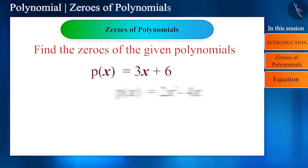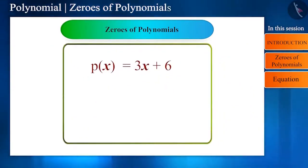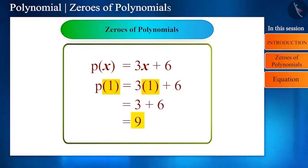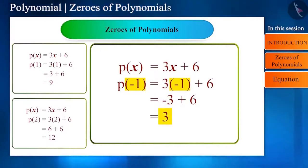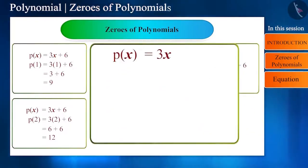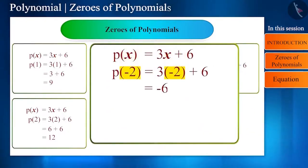So, let's take some polynomials and find their zeros. Let's put different numbers in the first polynomial. By putting 1, we get 9 and we get 12 on putting 2. By increasing the number, the value of polynomial is also increasing. So, let's put a number smaller than 1. On putting -1, we get 3. Values are decreasing. Now, let's put -2. By putting this value, we get 0.